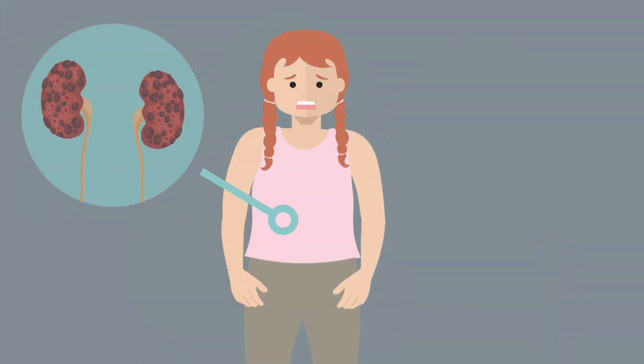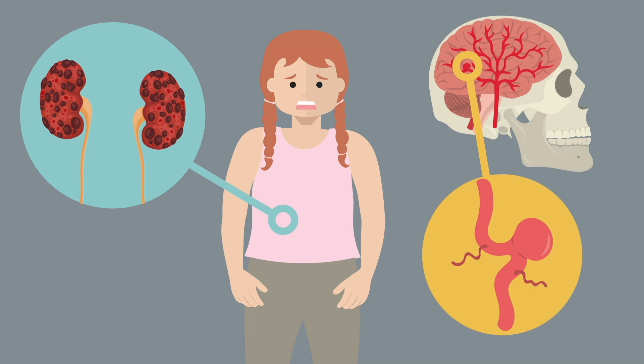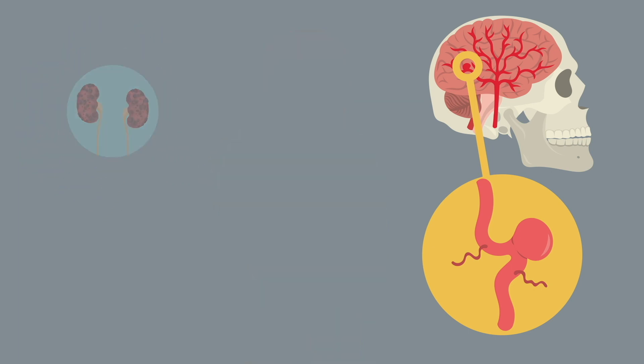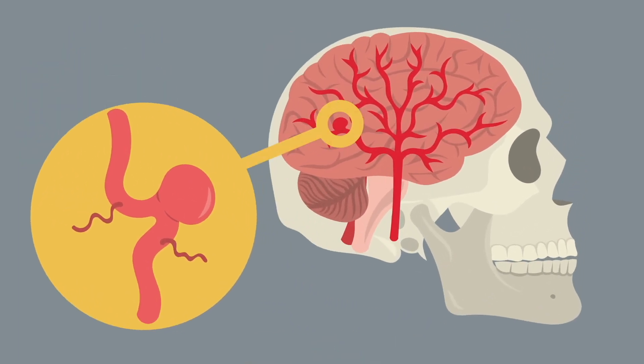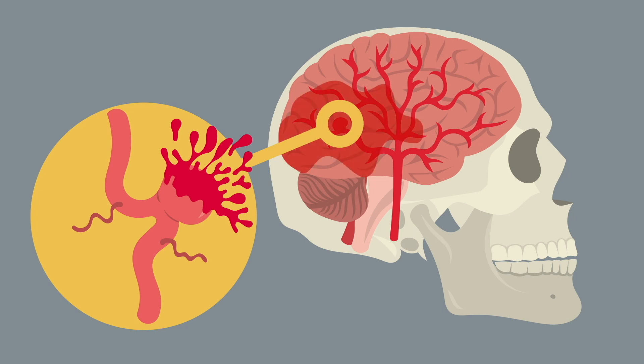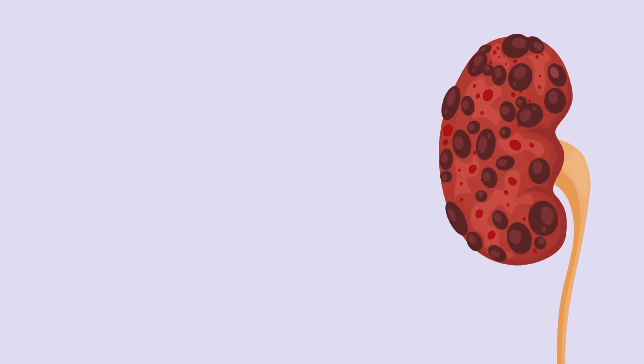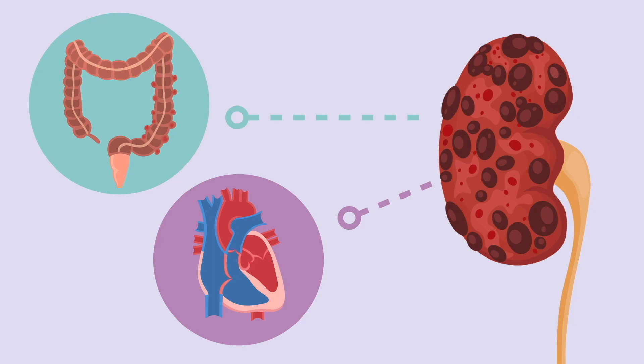Affected individuals are also at increased risk for intracranial aneurysms, which are dilations of the arteries located within the skull. The main issue with that is that these aneurysms can rupture, causing serious, potentially life-threatening intracranial hemorrhage. Polycystic kidney disease is also associated with colonic diverticulosis and various types of cardiac valve diseases.